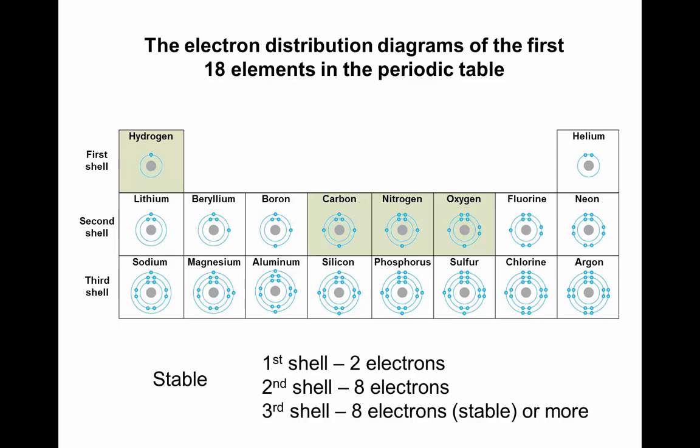If an atom's first energy level is its valence shell, it requires two electrons to be stable. If an atom's second energy level is its valence shell, it requires eight electrons to be stable, and so on to the third energy level, which can hold more than eight electrons but is stable at that number. Consider hydrogen — it only has one electron in its valence shell.